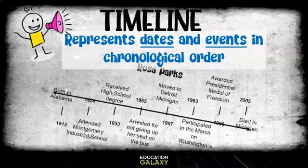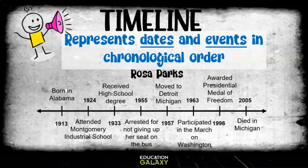Let's look at an example of a timeline about Rosa Parks. Did you know that she was arrested for not giving up her seat on the bus in 1955? What a courageous woman!